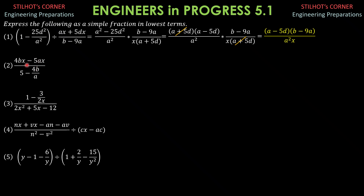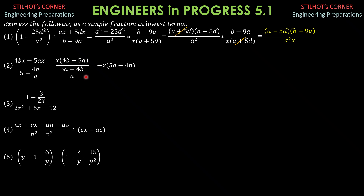For Problem 2, the numerator has common factor x, so we write this as x(4b − 5a). The denominator is (5a − 4b) over a. So we have x(4b − 5a) over (5a − 4b)/a. We multiply the numerator by negative 1, factoring out −1, so that becomes −x(5a − 4b) times the reciprocal of the denominator, which is a over (5a − 4b). We can cancel (5a − 4b). Therefore, the final answer is −ax.